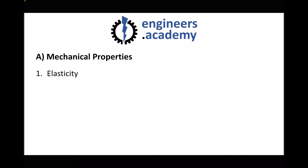When we talk about the elasticity of a material, we're talking about how readily it deforms and then returns to its original shape. The simplest way to think of this is placing a piece of material under a tensile load — if that piece of material has high elasticity then it's going to stretch.